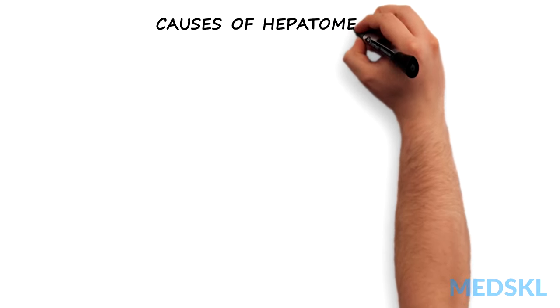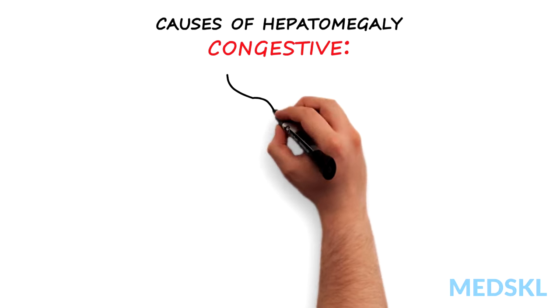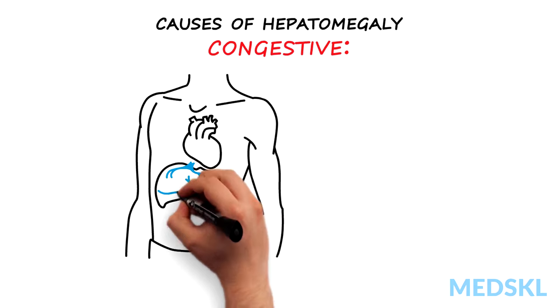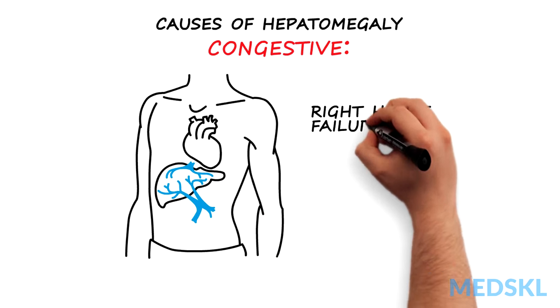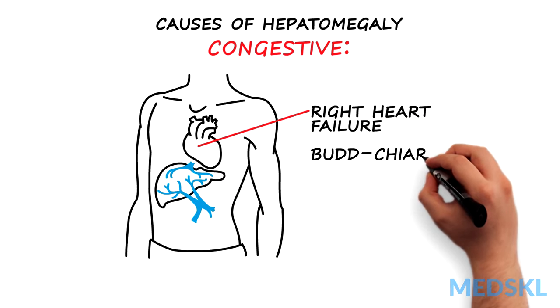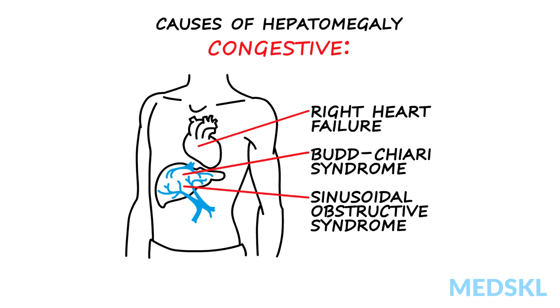Hepatomegaly may be a sign of an underlying pathological process. The causes of hepatomegaly are many, but can be grouped into the following categories. Congestive: this may be seen in right heart failure, Budd-Chiari syndrome, or sinusoidal obstruction syndrome.